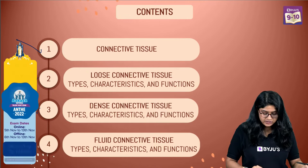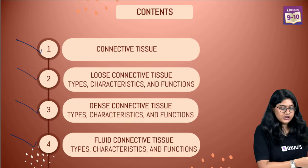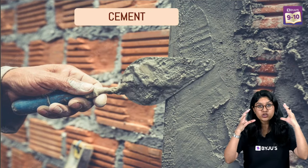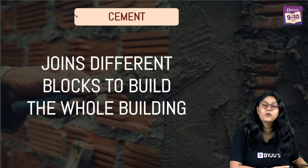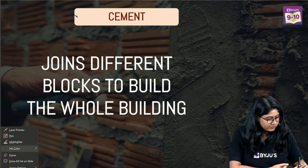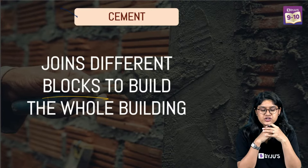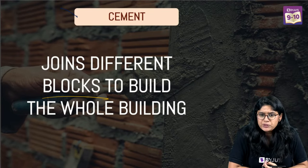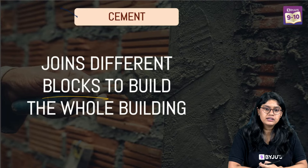Let's get started. So now we are talking about the connective tissue. As the name suggests, connective - it will be connecting. We have these bricks that will actually come together; if you apply cement on it, it helps in connecting them. So similarly, connective tissue joins different blocks to build a whole building - tissue that joins together giving us a whole structure. Muscle tissue will be covered next week; today we focus on connective tissue.